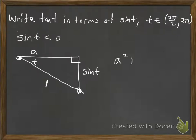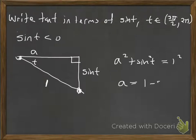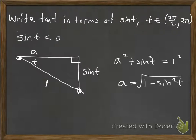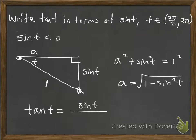So a² plus sine²(t) is going to equal 1². We'll solve for 'a' — we'll subtract sine squared and then take the square root. We do get plus and minus, but because 'a' is the x-coordinate and it's on the positive side of the x-axis, it's going to be positive. So when we write our tangent of t, it's going to be the opposite, which is sine(t), over the adjacent side, which is √(1 − sin²(t)).